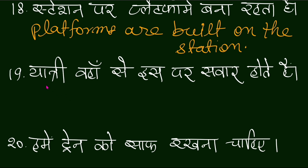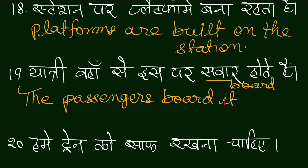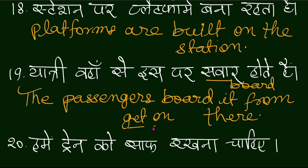Yaatri wahaan se is par savar hote hain. 'Savar hona' — you can also use 'board.' So: 'The passengers get on the train from there,' or 'The passengers board it from there.'